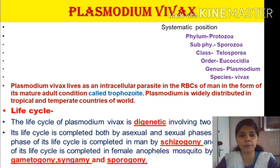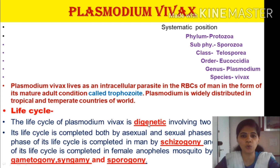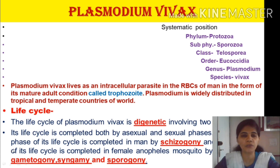Plasmodium is widely distributed in the tropical and temperate countries of the world. The life cycle of Plasmodium is digenetic — meaning it requires two hosts to complete its life cycle. This life cycle is completed by two phases: the asexual phase, which is completed in the human being by the process known as schizogony, and the sexual phase.